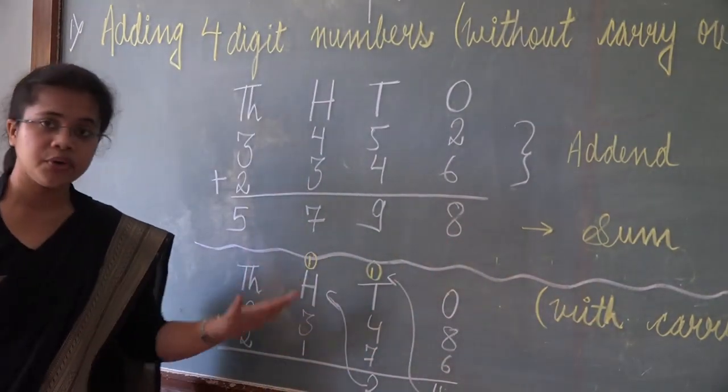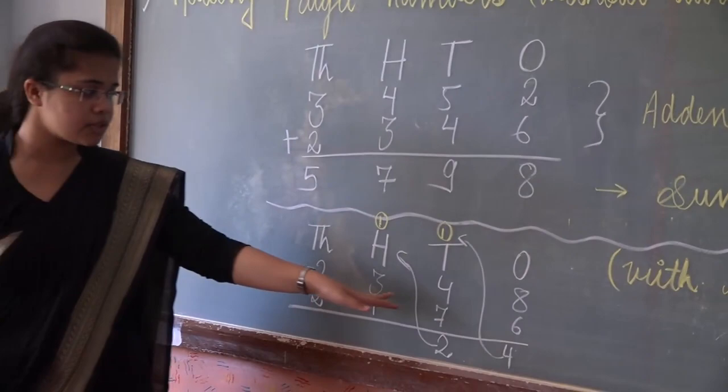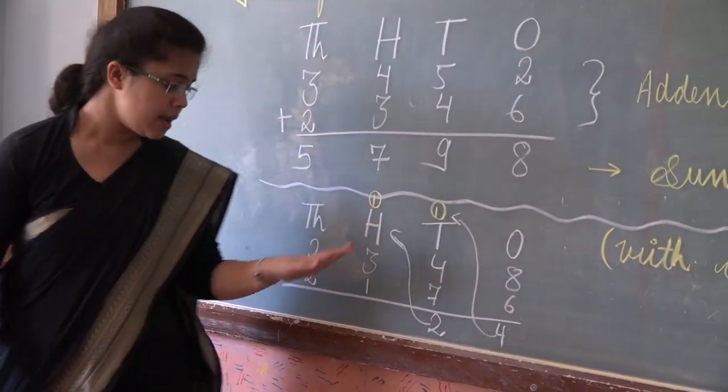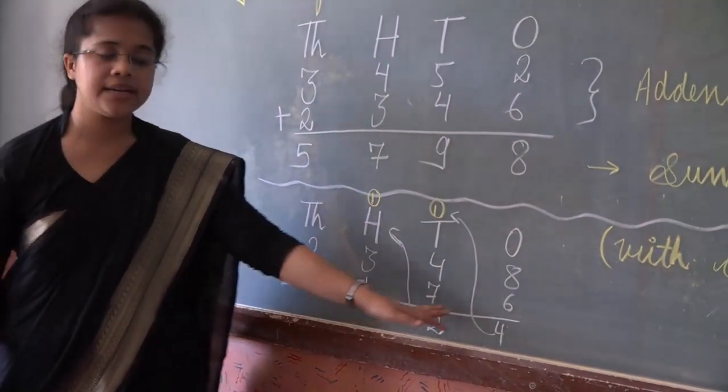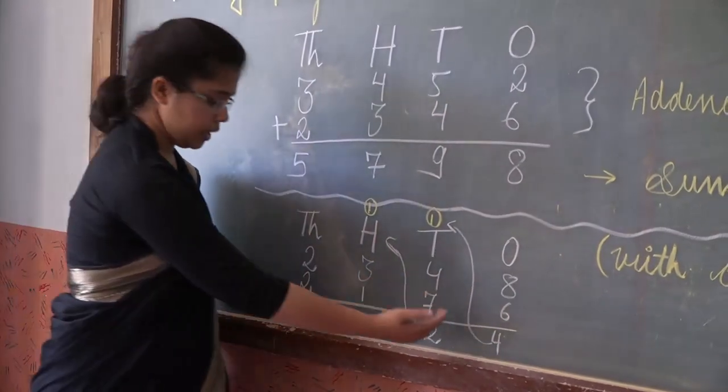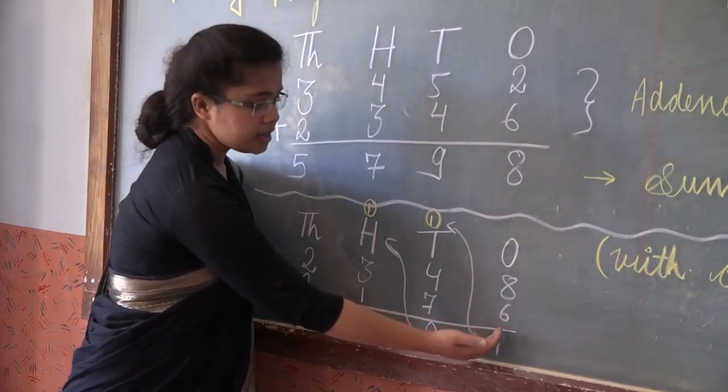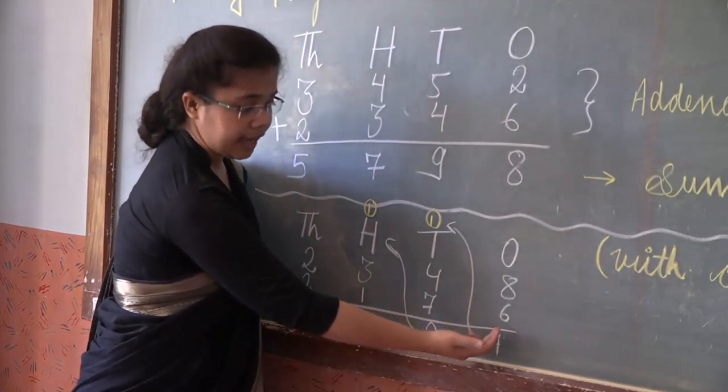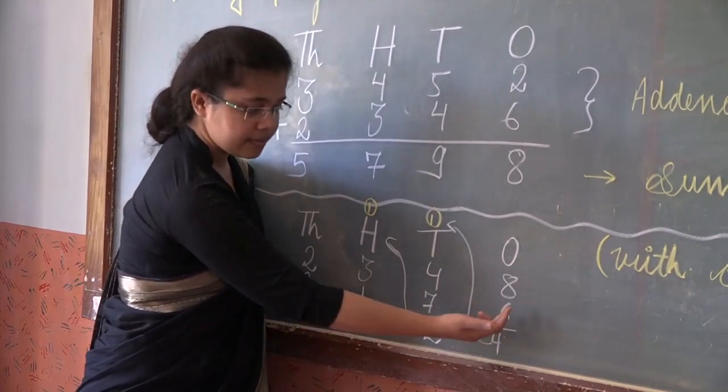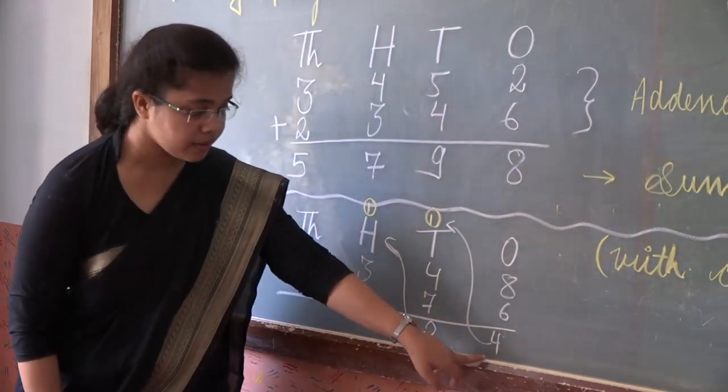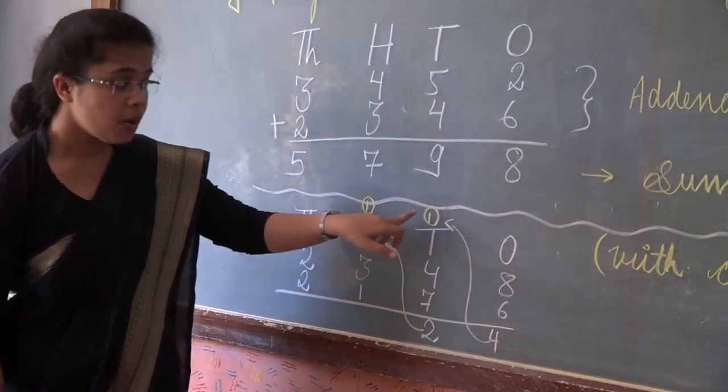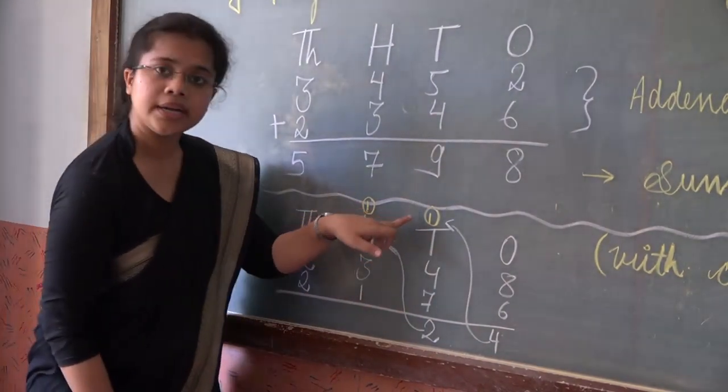It means we have to carry. Let us take the example 2348 plus 2176. So here you can see when you add these two numbers 8 plus 6 that is 14. So we will write 4 here and 1 is carry to 10 space.